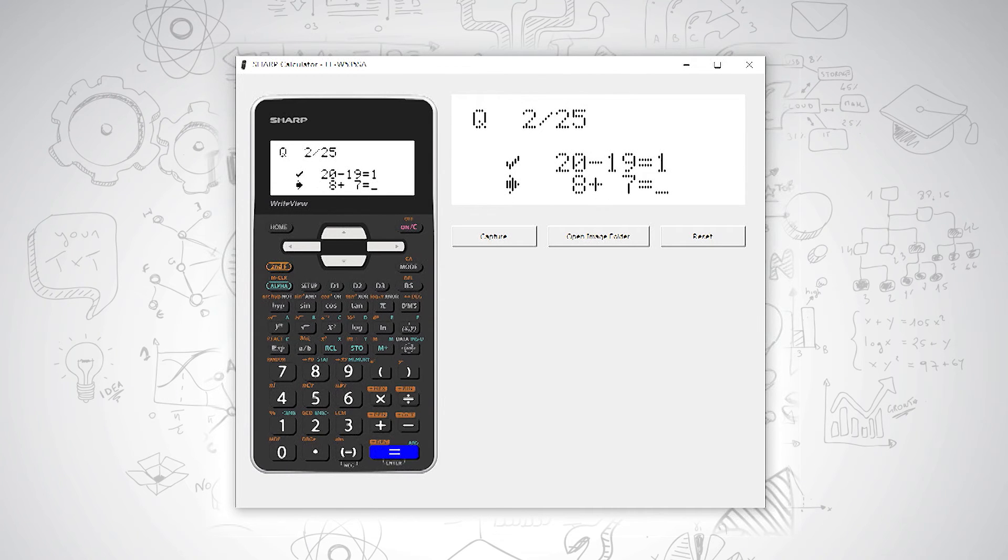If you don't know the answer or you get a question wrong, for example, the calculator will mark it wrong and repeat the question again for you. The calculator will keep asking you the same question until you get it right.